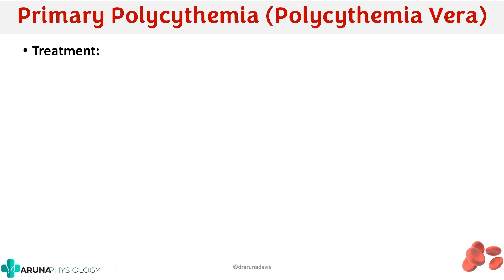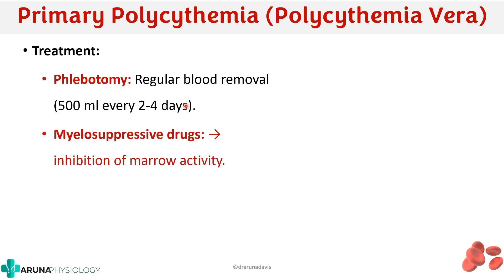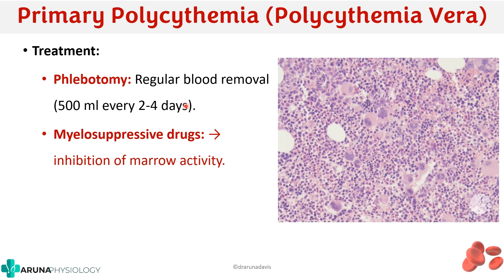The common treatments are phlebotomy — removing at least 500 ml of blood every 2 to 4 days — and myelosuppressive drugs, which inhibit marrow activity. Since the pathology is uncontrolled proliferation in the marrow, myelosuppressive drugs can inhibit this activity and thereby decrease production.